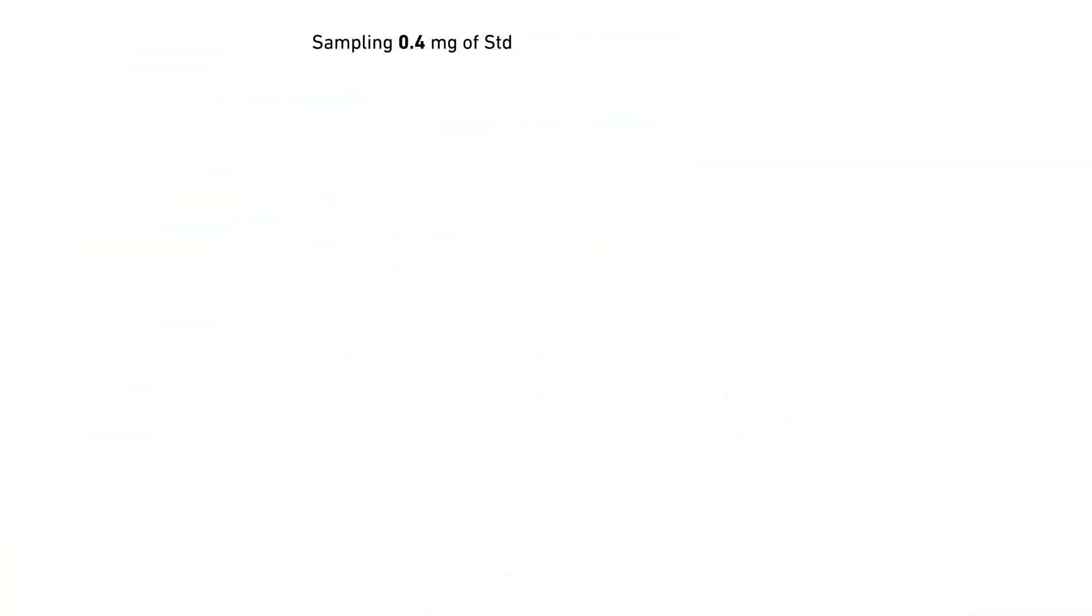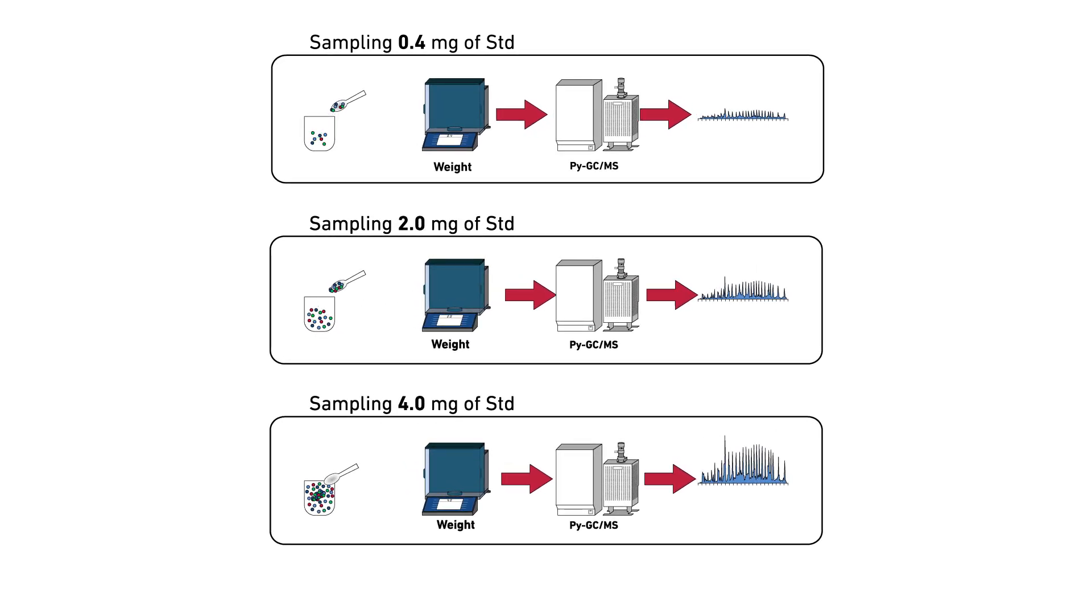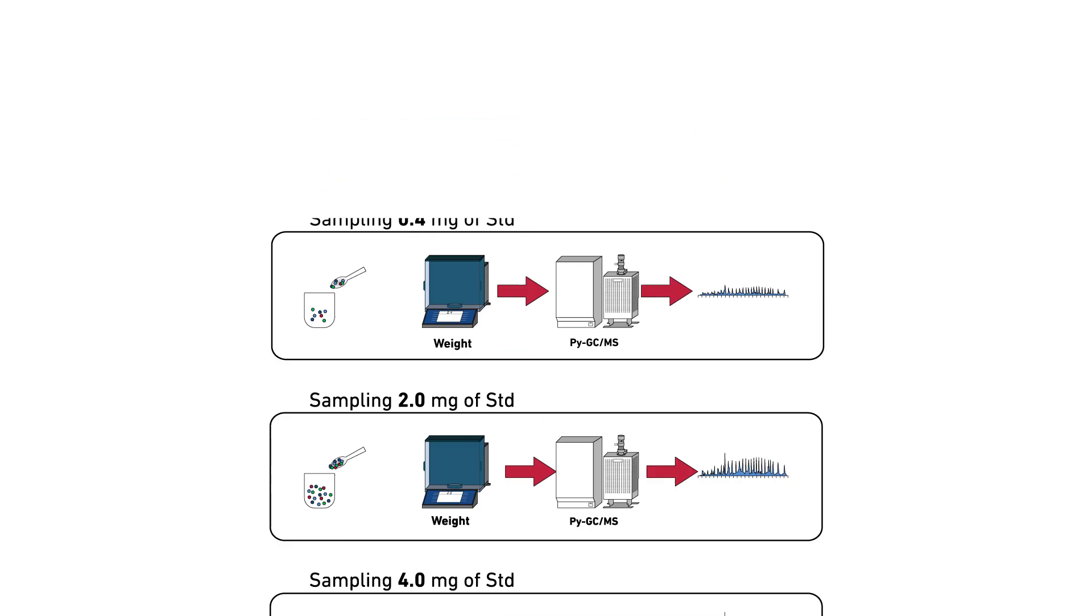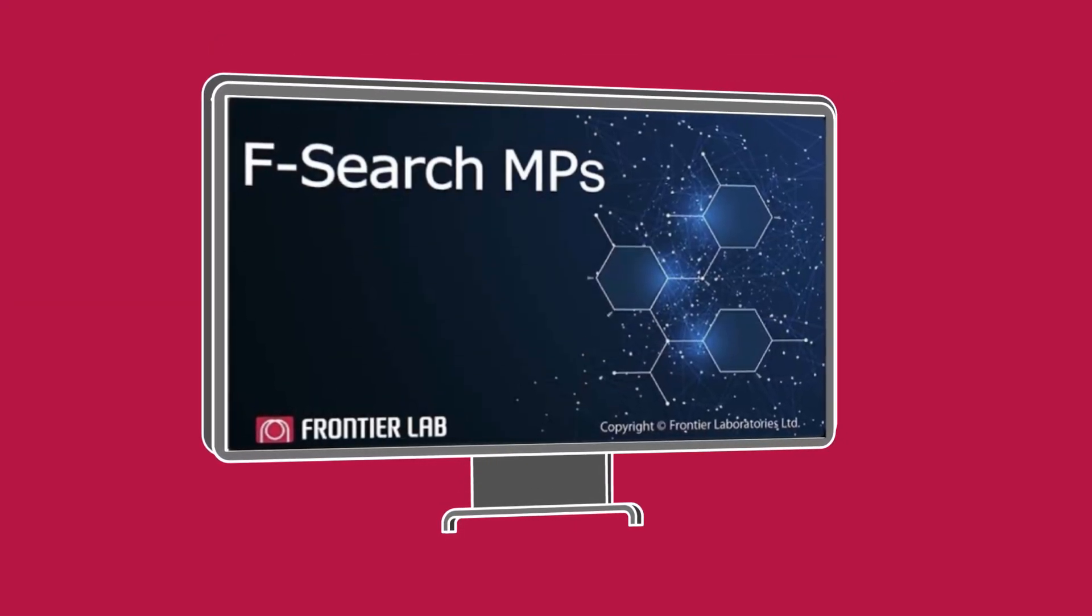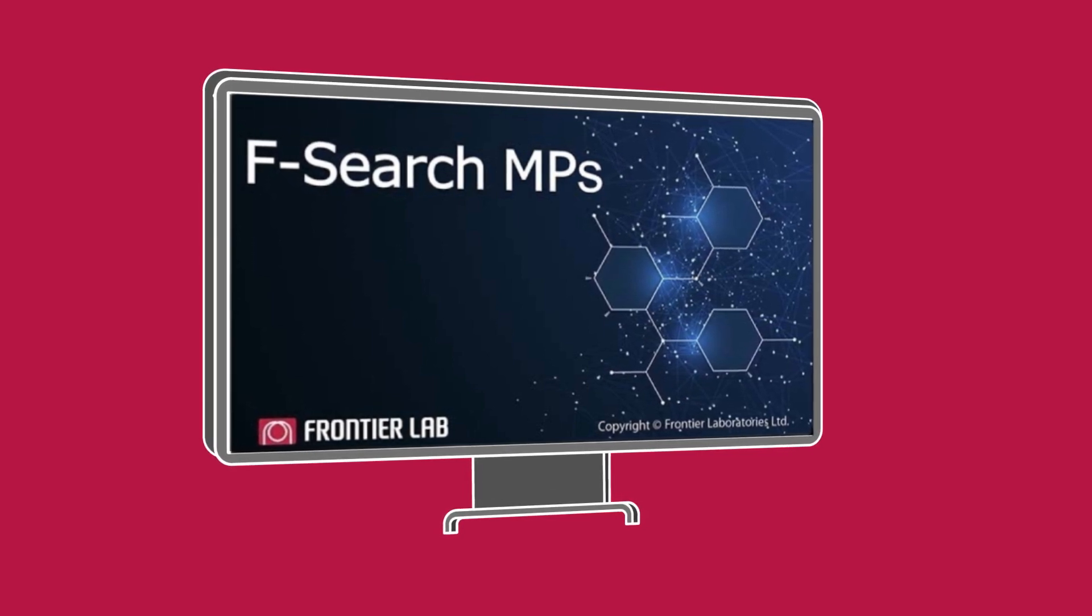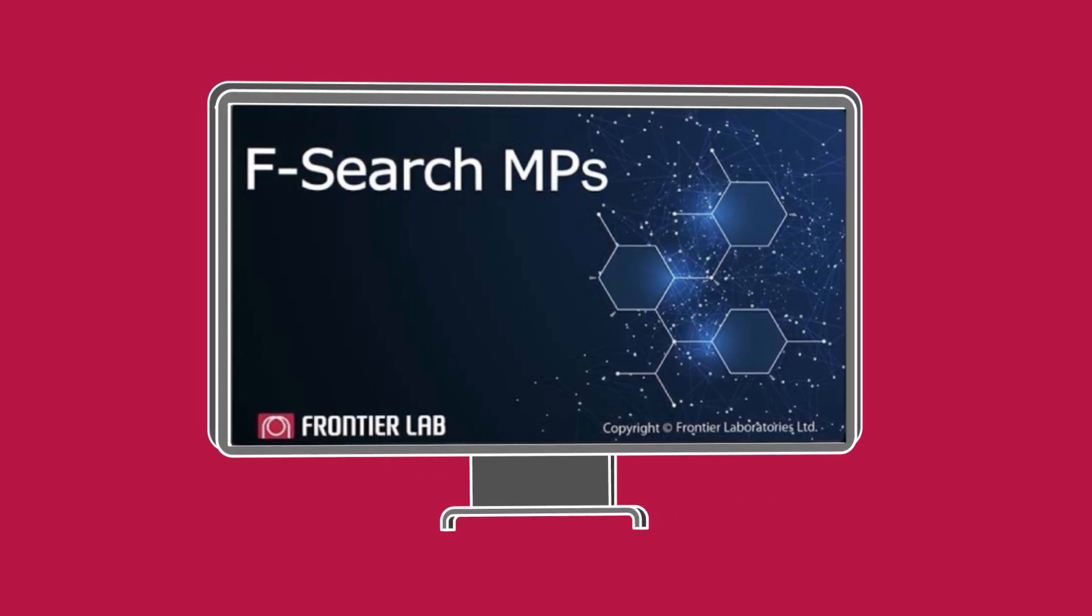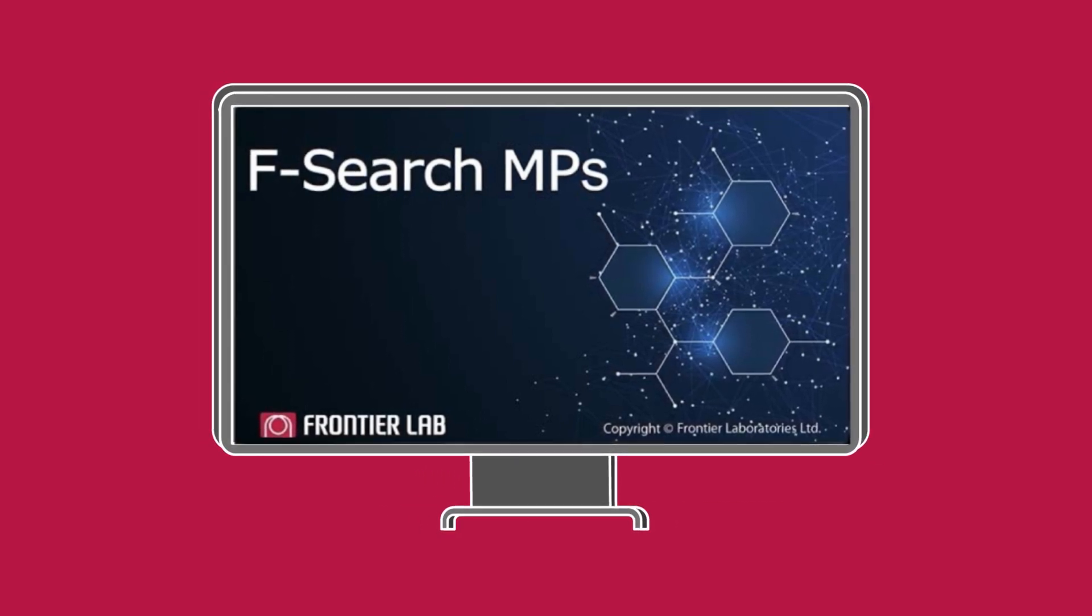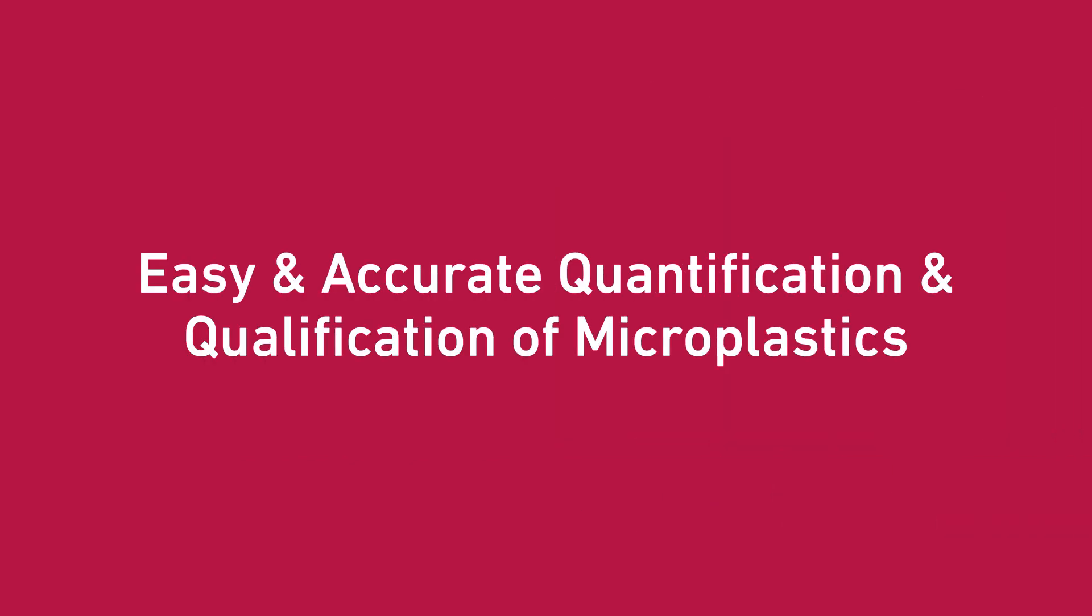Follow the data acquisition with data analysis using F-Search MP Engine to identify and quantify the microplastics. The intelligent F-Search MP Engine is another competitive advantage Frontier provides its users. F-Search MP is an identification and quantitation program with mass spectral libraries of pyrolysates that enables you to quickly and accurately identify polymer types for unknown samples.